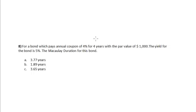For a bond which pays an annual coupon of 4% for 4 years with a par value of $1000, the yield for the bond is 5%. The Macaulay duration for this bond — the Macaulay duration is the estimate of a bond's interest rate sensitivity based on the time in years until the promised cash flow arrives.